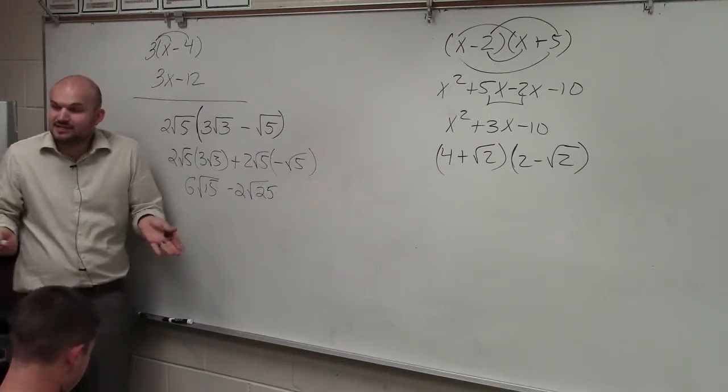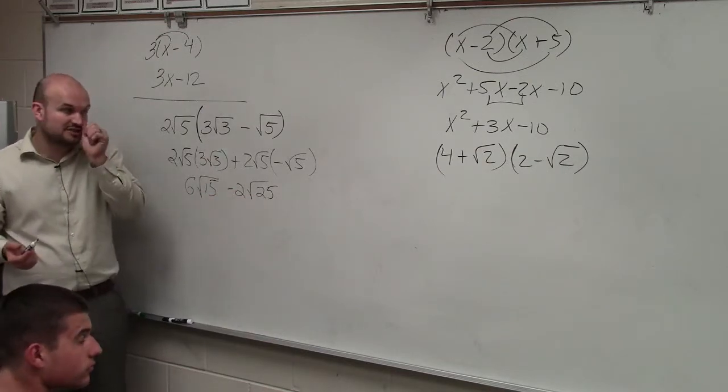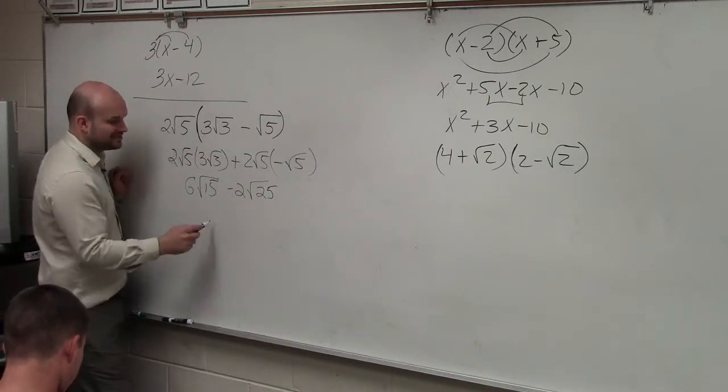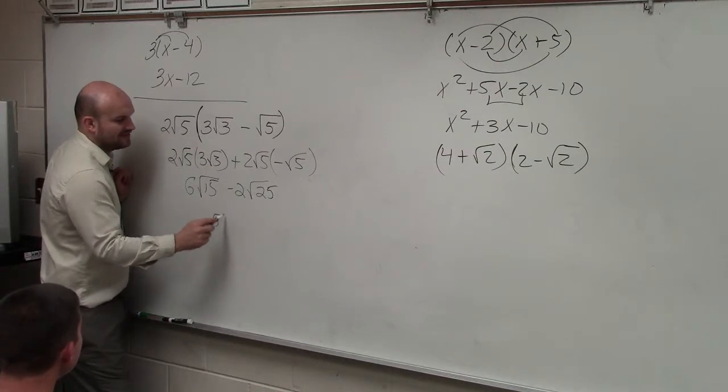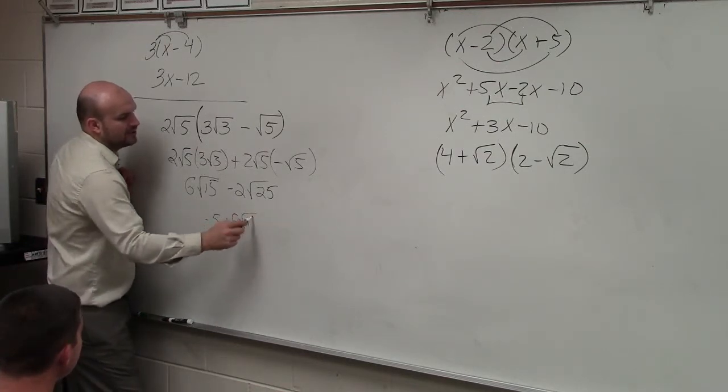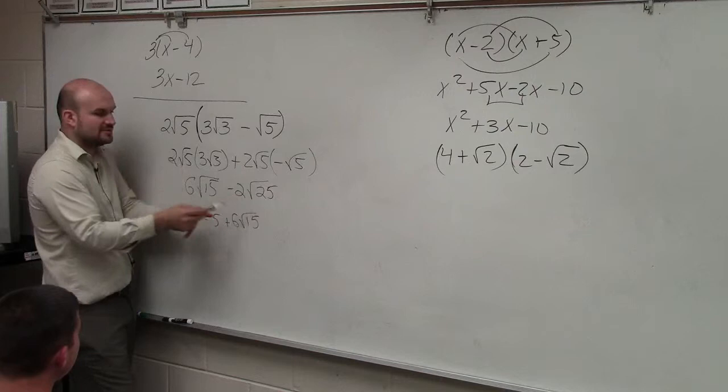can I simplify this any further? Yeah, I can take the square root of 25, which is 5. So my final answer, I'll write this as negative 5 plus 6 square root of 15. I'm just switching those around and making sure